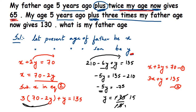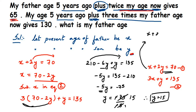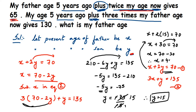Now we substitute Y equals 15 back into the first equation to find X. In the first equation: X plus 2 times 15 equals 70, so X plus 30 equals 70. Transposing 30 to the other side: X equals 70 minus 30, which is 40. Therefore X equals 40, which is the father's age.